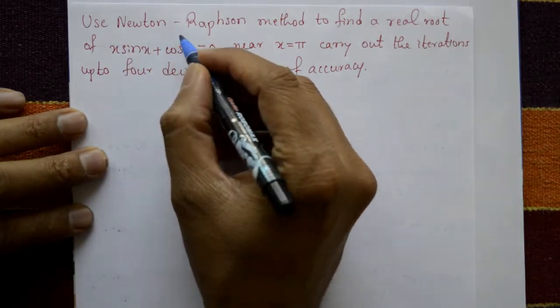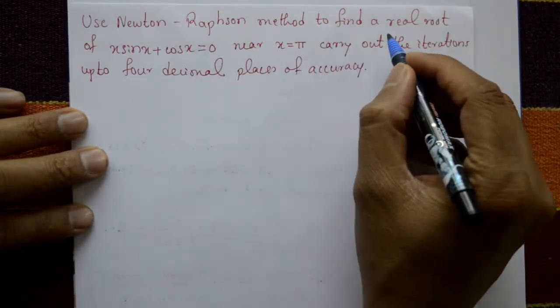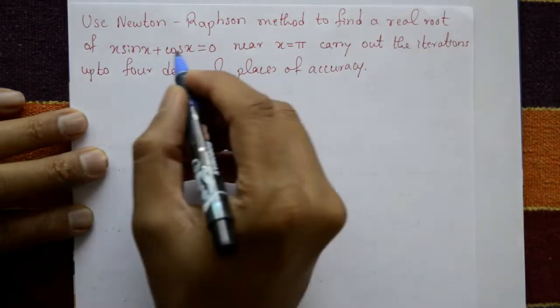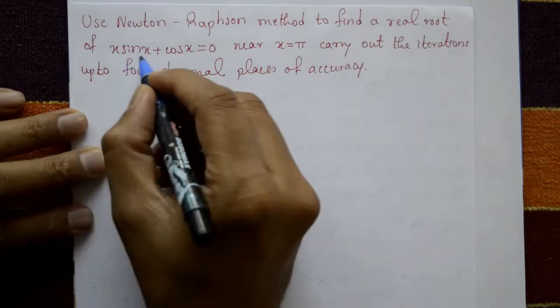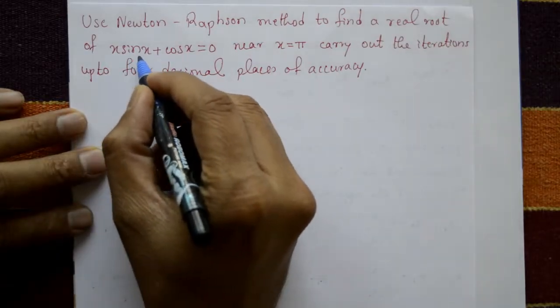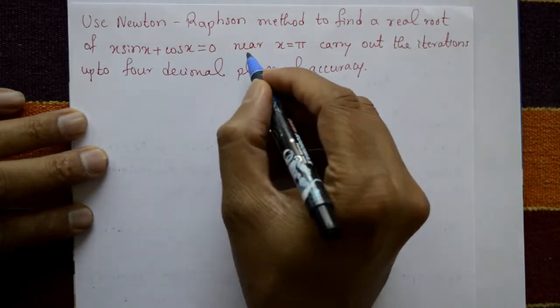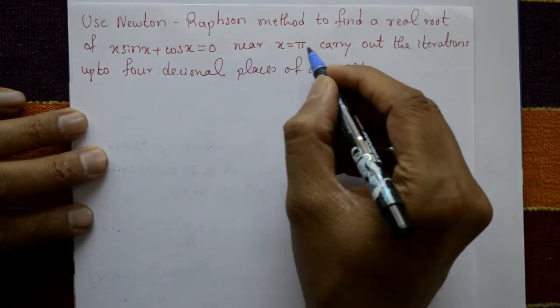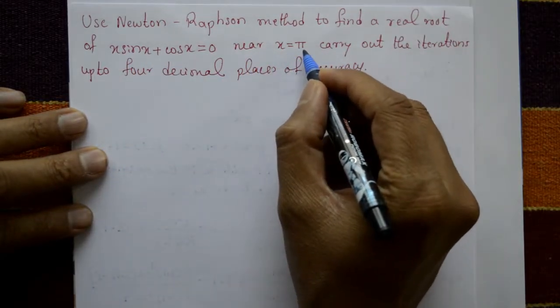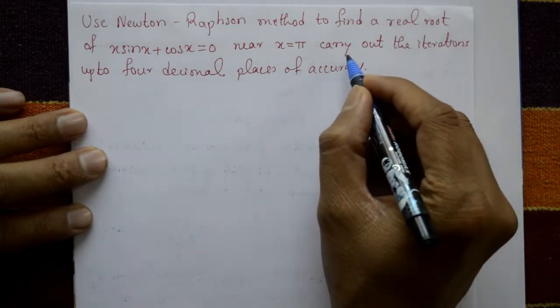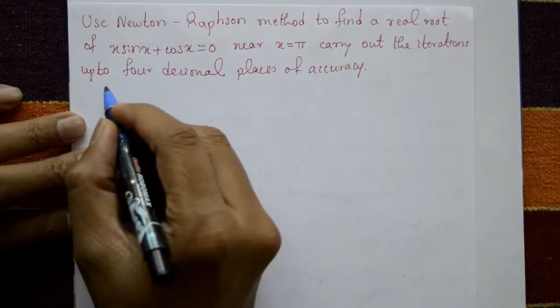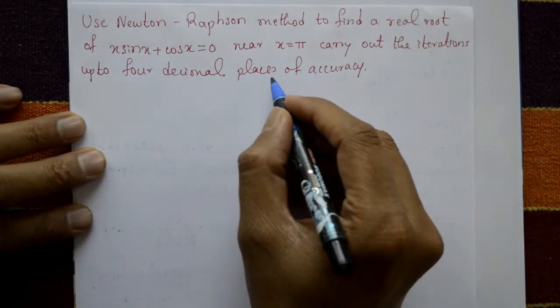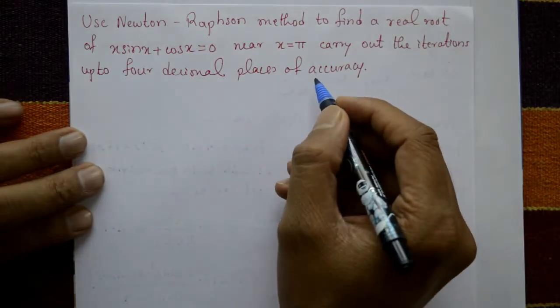Use the Newton-Raphson method to find a real root of x·sin(x) + cos(x) = 0, near x = π. Carry out the iterations up to four decimal places of accuracy.